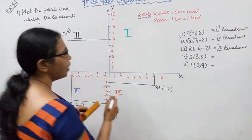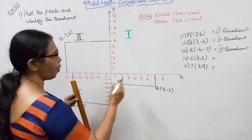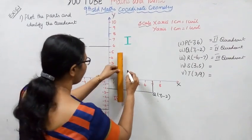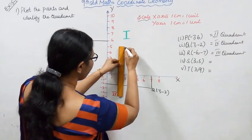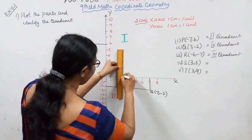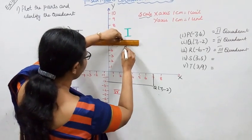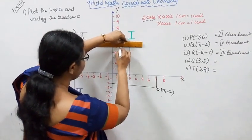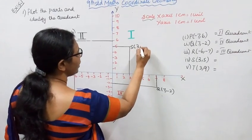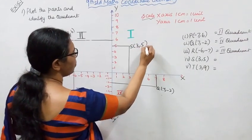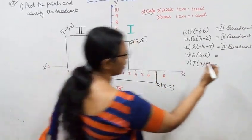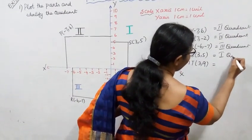Point S is at (+3, +5). Plus 3 on the X-axis, plus 5 on the Y-axis. Since both are positive, S is in the first quadrant.